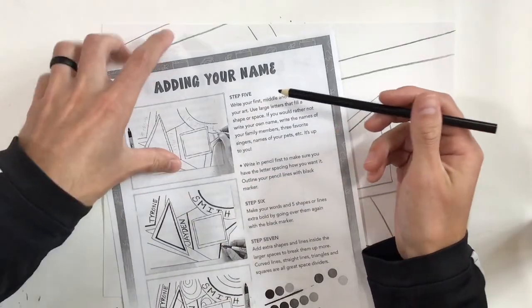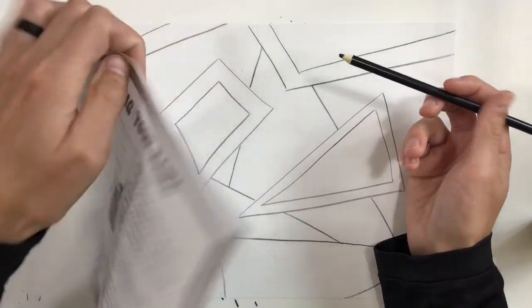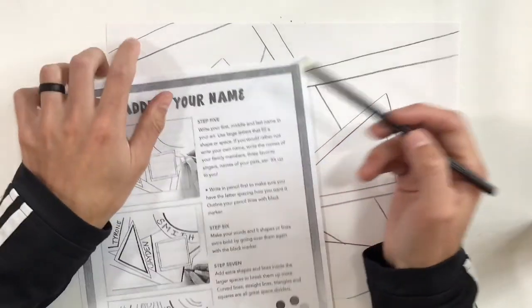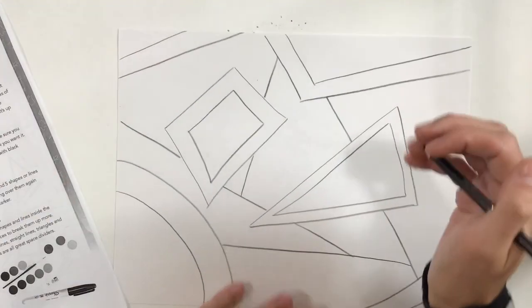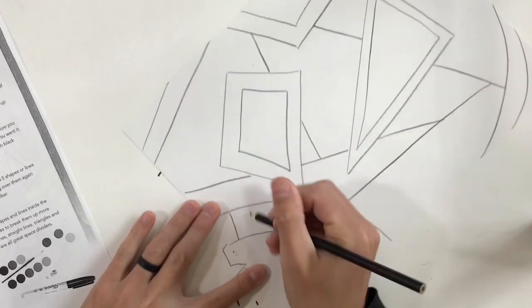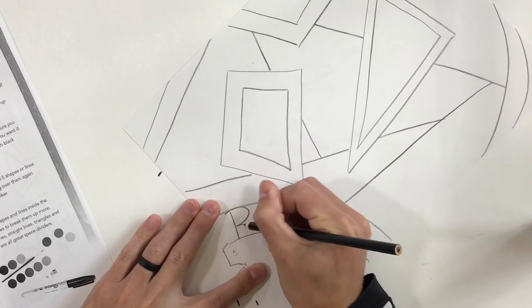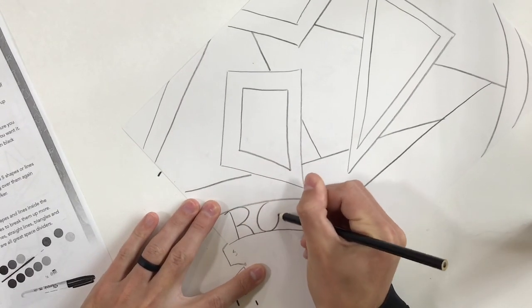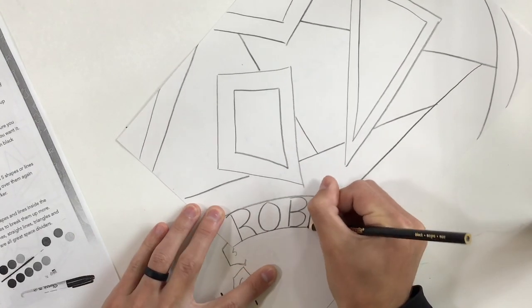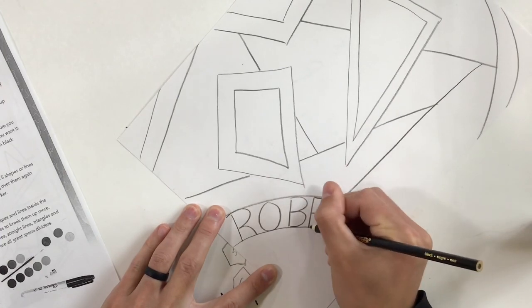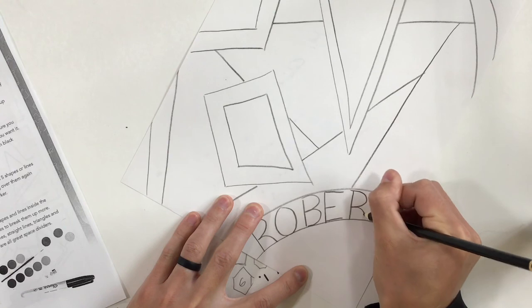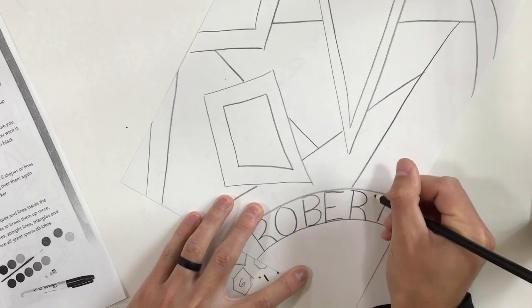Step five, make sure to flip your paper over. It's double sided. Step five, write your first, middle and last name in your art. So my first name is Robert. Maybe I'll do Robert down here. I'm going to do mine in all capitals, writing it nice and neatly. Remember, I'm using a black colored pencil. I decided not to use a regular pencil today. So if I make a mistake, I'm stuck with it. So Robert.